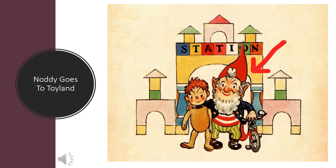It's about how Noddy met Big Ears, a friendly brownie, and made friends with him, and how he came to live in Toyland.